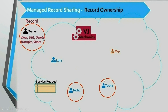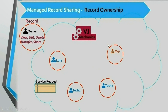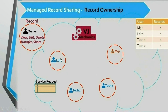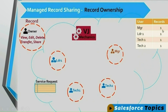In the same way, if tech2 creates a record, he gets full access — ownership of that record. For records created by ldr1, ownership access is assigned only to ldr1. The same applies to all users: if mgr creates any record, he becomes the owner of that record.